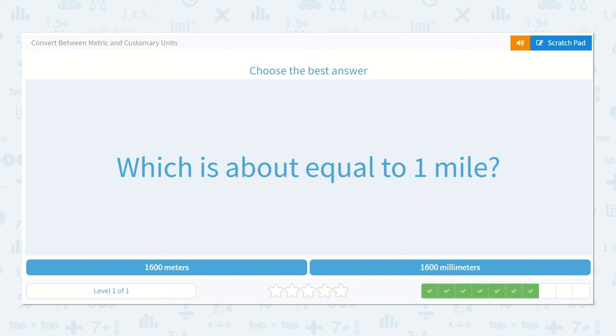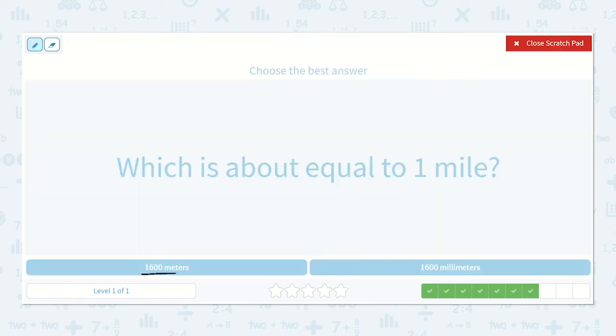Which is about equal to 1 mile? So we looked at this. Would it be 1,600 meters or 1,600 millimeters? Remember, millimeters are very small. It would be 1,600 meters.